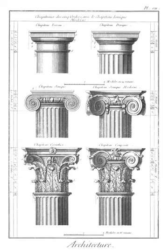Squinch: a piece of construction used for filling in the upper angles of a square room so as to form a proper base to receive an octagonal or spherical dome.